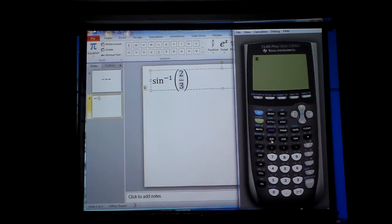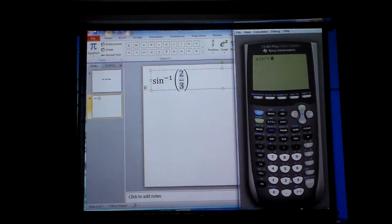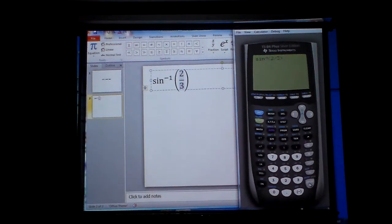And then all I'm going to do now is this. I don't want sine, I want second sine. Second sine gives me the angle. I have this nice parenthesis here. I'm just going to go ahead and hit the two divided by three, close the parenthesis and hit enter. And it turns out to be 41.8 degrees.